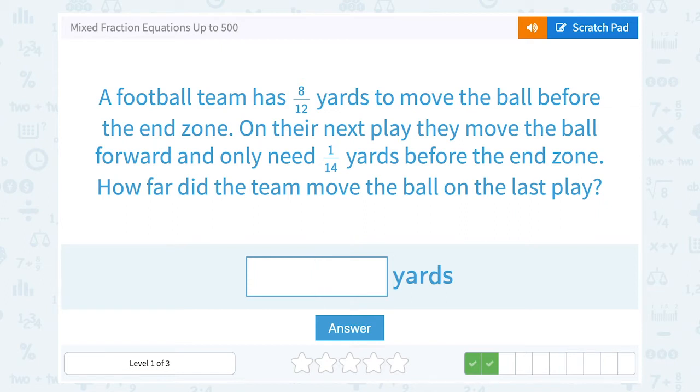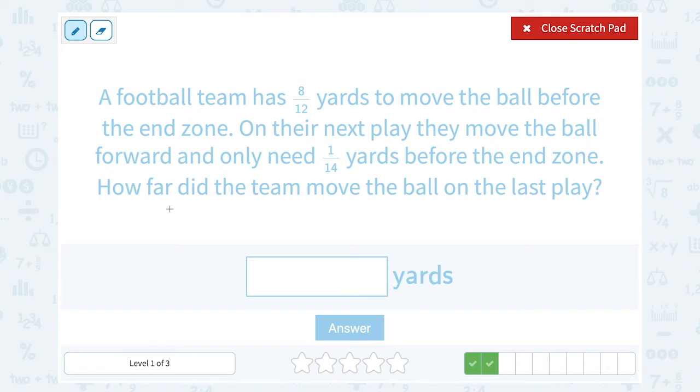A football team has 8/12 yards to move the ball before the end zone. On their next play, they move the ball forward and need 1/14 yards before the end zone. How far did the team move the ball on the last play? Well, if we take the total amount they needed before the end zone, which was 8/12, and we subtract what they need after the next play, which is 1/14, the difference between that should tell us how much they move the ball on that one play.